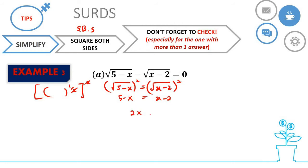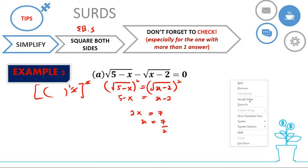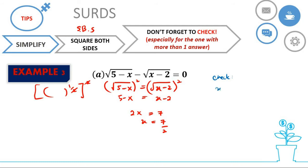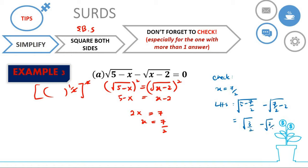Now we have 2x equals 7, so x equals 7 over 2. For checking, you can use your calculator or do it manually. When x equals 7/2, the left-hand side gives √(5 − 7/2) − √(7/2 − 2), which is √(3/2) − √(3/2) = 0. That matches the right-hand side, so x = 7/2 is our answer.